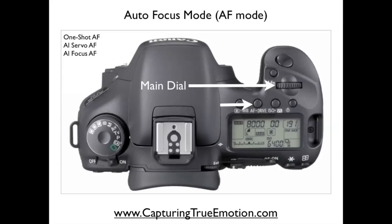For your autofocus mode, to select one of three autofocus modes, you would push your AF button — it says AF. Push that button and then turn your dial. You would then be able to shoot in one shot, AI servo, or AI focus.